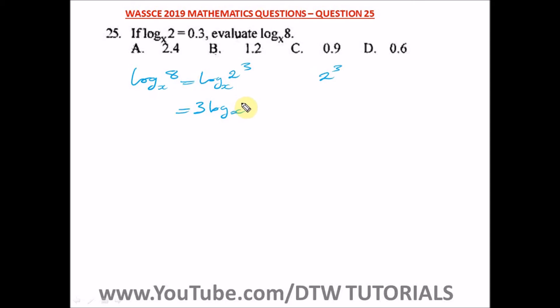Log 2 base x. From here we've been given that log 2 base x is equal to 0.3, so just put in the value of 0.3 here. We have equal to 3 times 0.3.